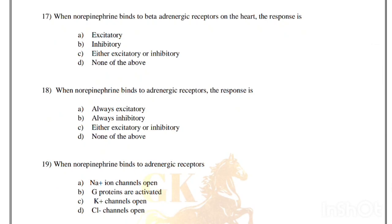When norepinephrine binds to beta-adrenergic receptors on the heart, the response is: excitatory, inhibitory, either excitatory or inhibitory, or none of the above. Correct answer is option A, excitatory. When norepinephrine binds to adrenergic receptors generally, the response is option C, either excitatory or inhibitory.